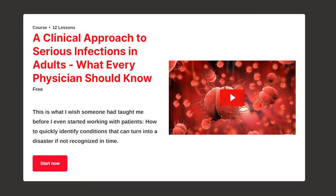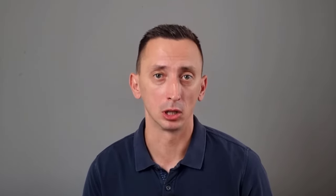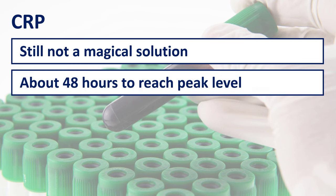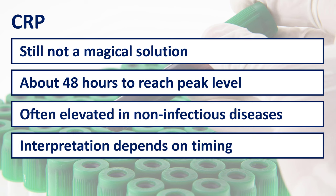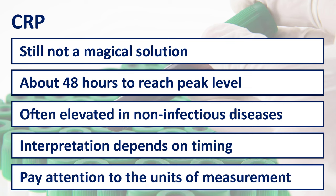I talk more about CRP, procalcitonin, the CBC, and all other tests in my free online course about recognizing serious infections early. I created this course for fellow clinicians who have to make quick decisions based on limited information — I highly recommend you take a look. In conclusion: CRP is very useful, but it's meaningless without the clinical context. It needs time to rise and reach its plateau, it can be elevated in non-infectious conditions, its dynamic is as important as its absolute value, and you should always pay attention to the units of measurement. Thank you for watching. Good luck out there and take care.